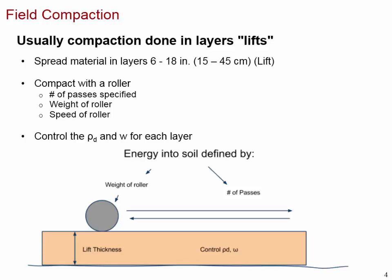In compaction, we always look at dry density or void ratio, and from dry density we can calculate relative density, and also the water content W for each layer. Energy input into the soil is defined by the weight of the roller, number of passes, and lift thickness. Lift thickness is the thickness of each layer to be compacted. Once one layer is completed, you dump another soil and compact another layer on top — that's another lift.